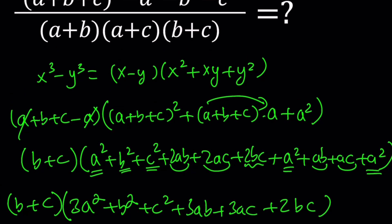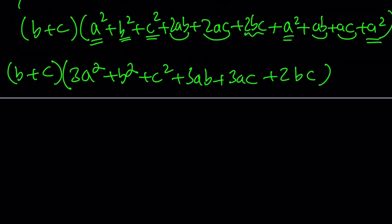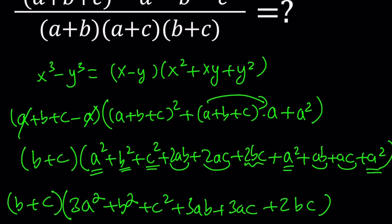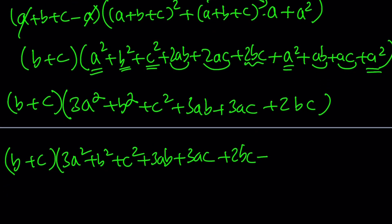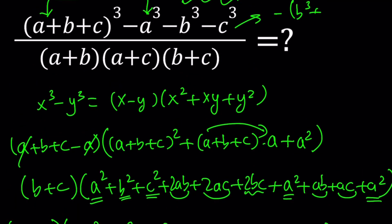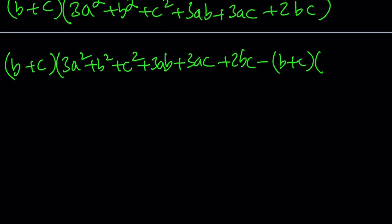Now from this product we want to subtract b cubed plus c cubed. So we're going to write the same expression: 3a squared plus b squared plus c squared plus 3ab plus 3ac plus 2bc. And now from here we're going to subtract b cubed plus c cubed, and to factor this b cubed plus c cubed we're going to write it as sum of two cubes, because this is equivalent to the opposite of b cubed plus c cubed. So we're going to factor this using sum of two cubes, and that's going to be b plus c times b squared minus bc plus c squared.